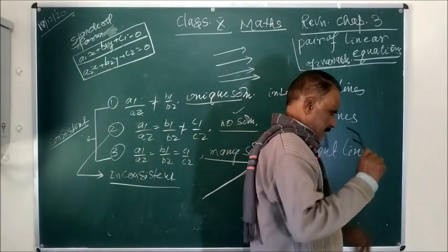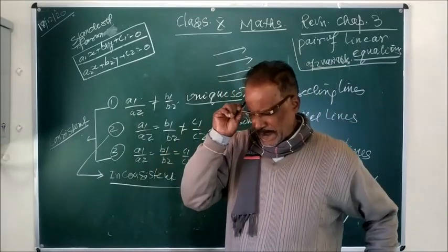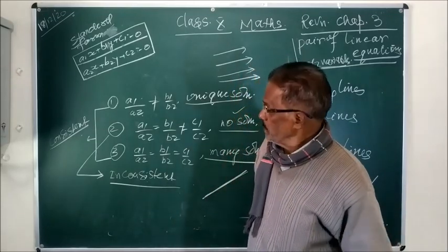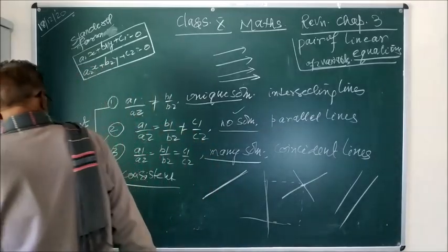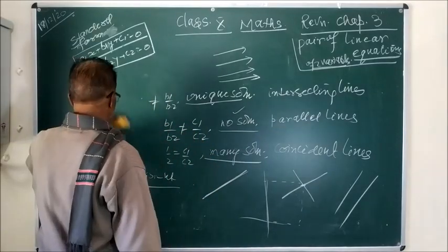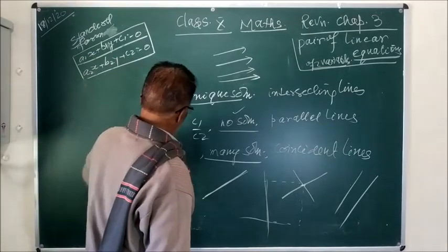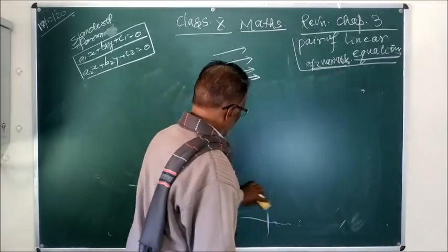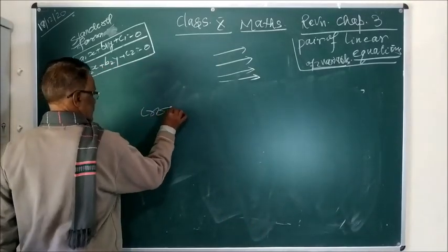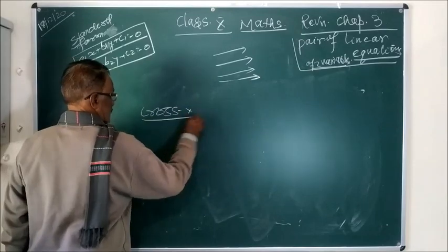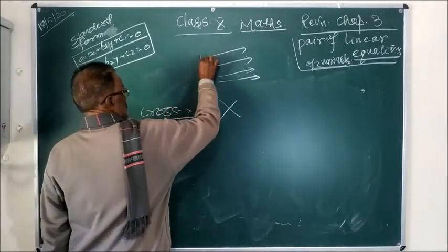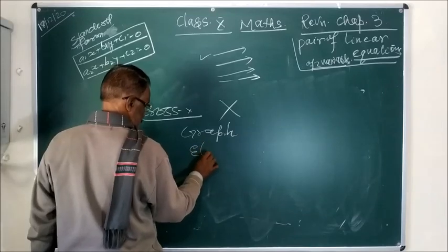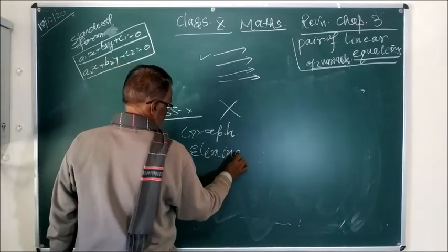So these are the introductions. Although I have explained this whenever I was teaching this chapter, I have just reminded you. There are four methods to solve a pair of linear equations, and one method — cross multiplication — has been deleted. So you have to focus on graphical method, elimination, and substitution.